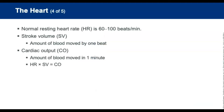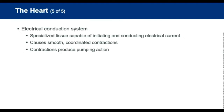Normal heart rate is between 60 to 100 beats per minute. Stroke volume (SV) is the amount of blood moved by one beat. Cardiac output (CO) is the amount of blood moved in one minute. Cardiac output equals heart rate times stroke volume.